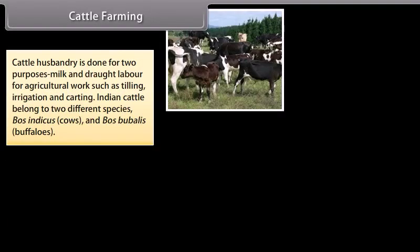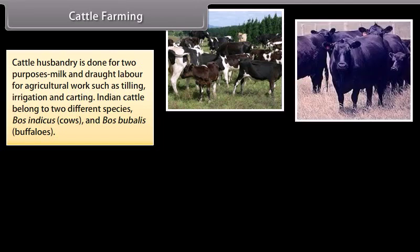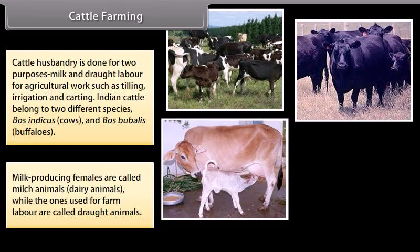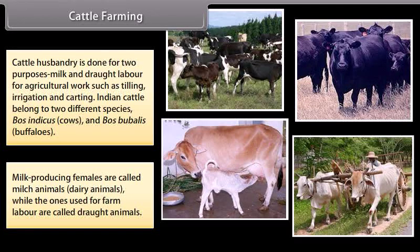Cattle husbandry is done for two purposes: milk and drought labor for agricultural work such as tilling, irrigation and carting. Indian cattle belong to two different species — Bos indicus (cows) and Bos bubalis (buffalos). Milk-producing females are called dairy animals, while those used for farm labor are called draught animals.